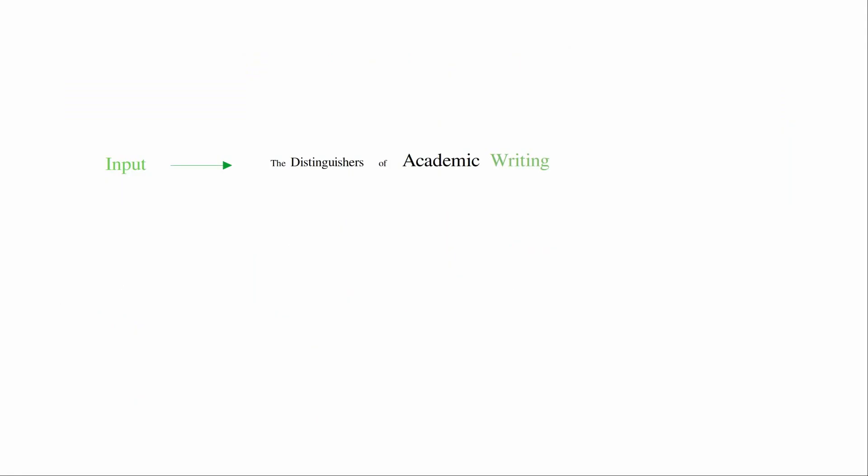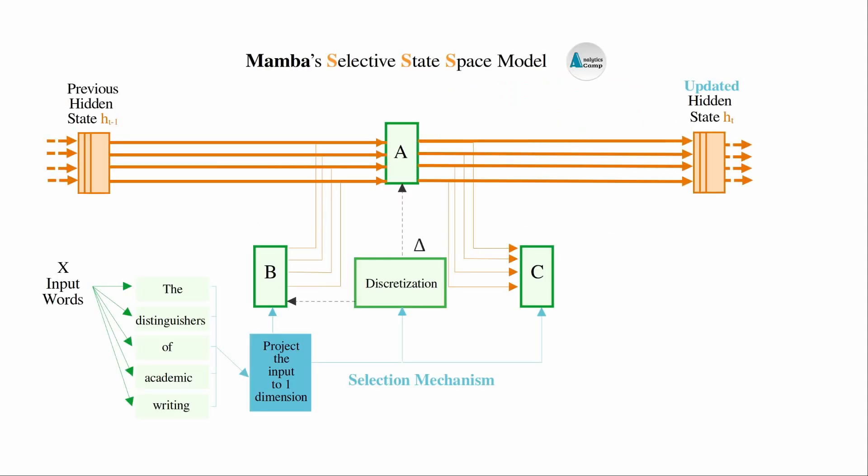The delta parameter controls how much focus to give to each input, for example each word, or if to ignore that word. This means that delta can reset itself. For example, with a small delta value it ignores the current word and instead focuses on the current input, for example the current word in the sequence. This is what is meant by selecting the input or selecting that particular word. This selection mechanism applies only to B and C and delta parameters in this current Mamba model.